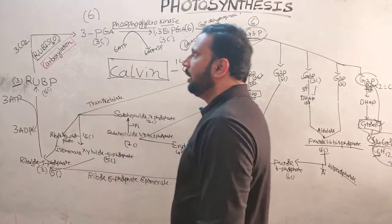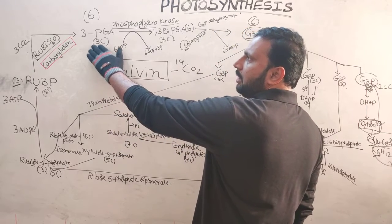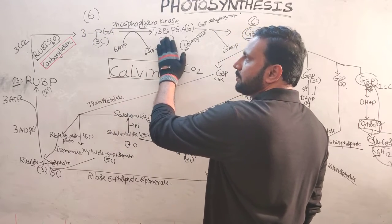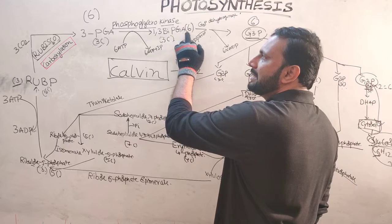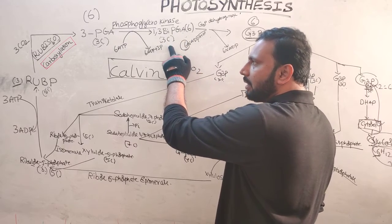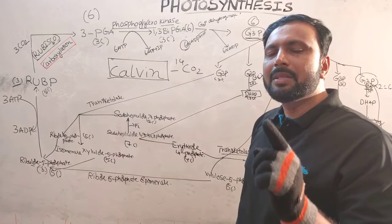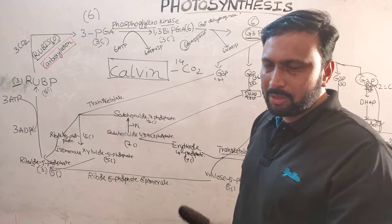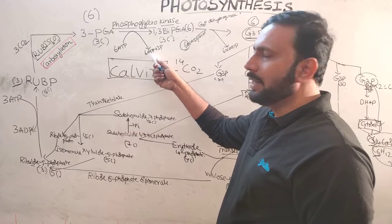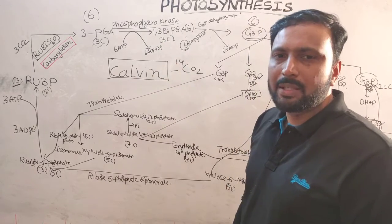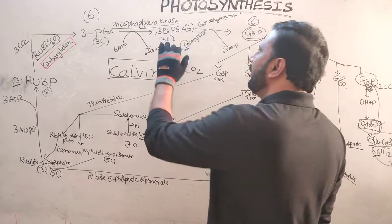Six molecules of 3-PGA, each containing three carbons, undergo phosphorylation to form six molecules of 1,3-bisphosphoglyceric acid (1,3-bisPGA), each containing three carbons. The phosphate donor is ATP — a product of the light reaction — so six ATPs are required. ATP is converted into ADP. The enzyme for this step is phosphoglycerokinase; when ATP is involved, the enzyme is always a kinase.